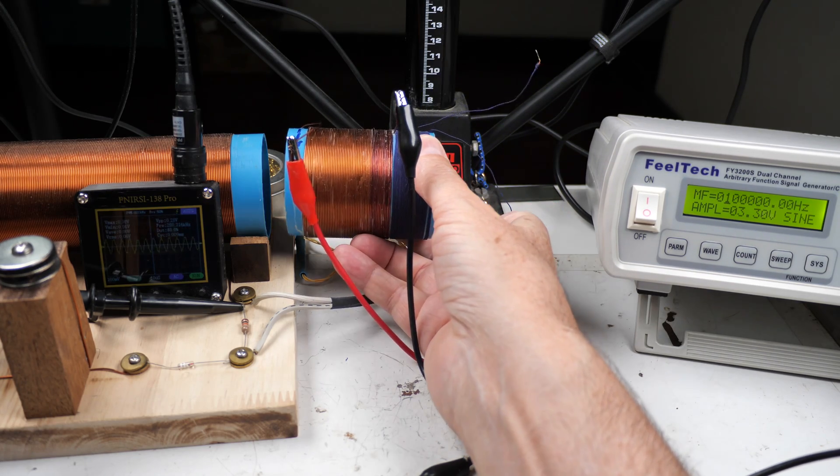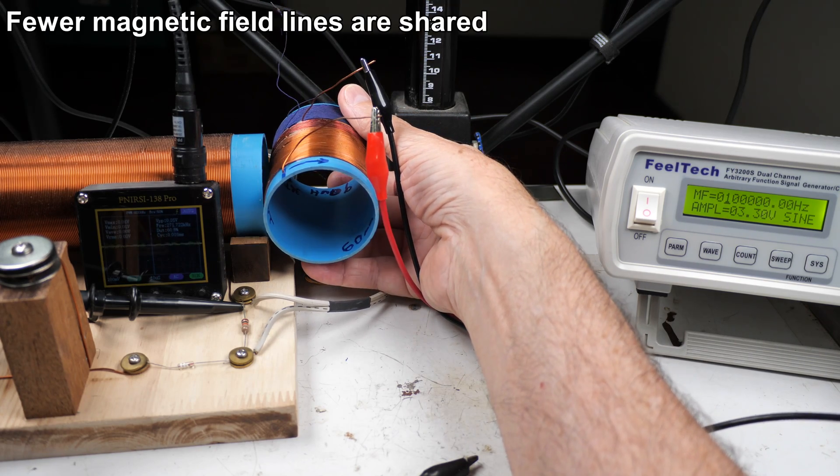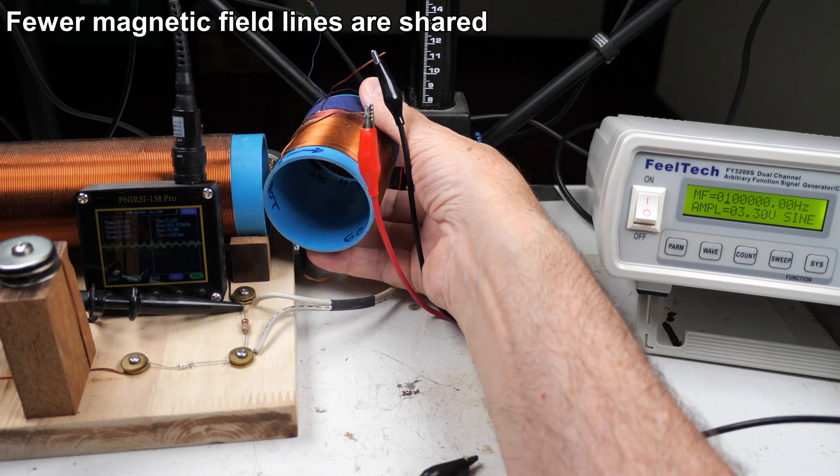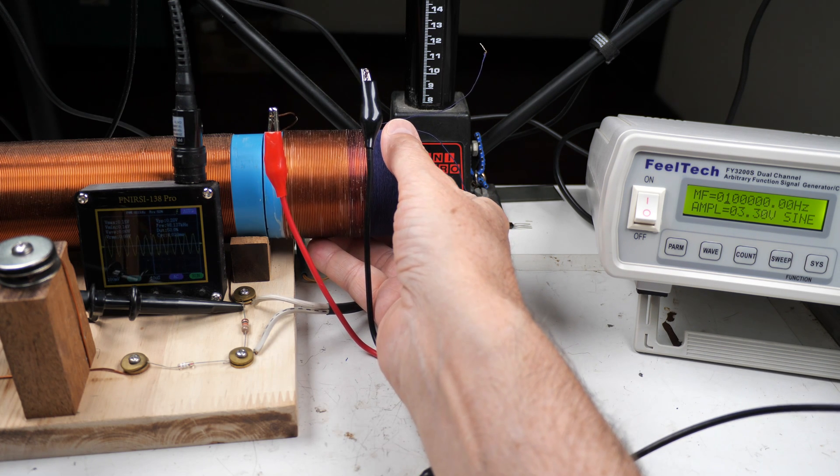We can also change the coupling by rotating this. You can see it will go down and become pretty much all noise. Then we can go back this way and we can go back to getting pretty good signal.